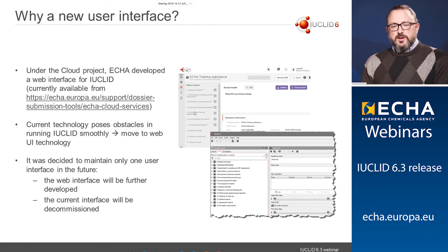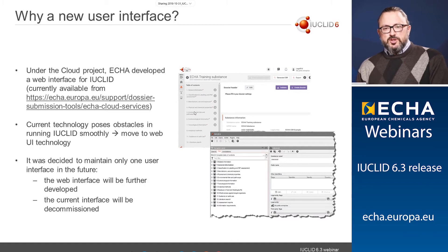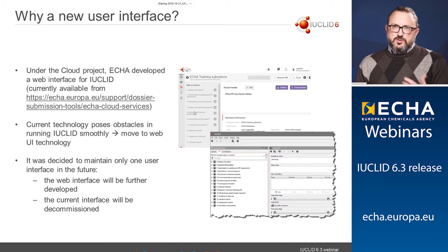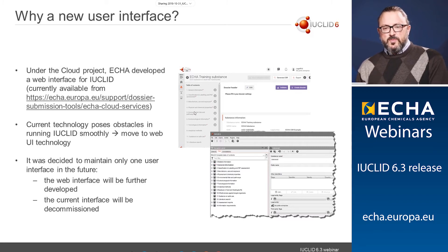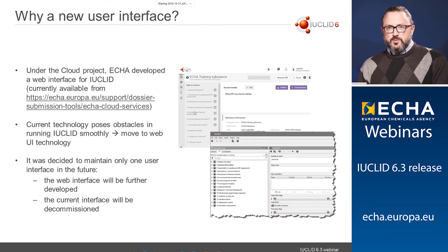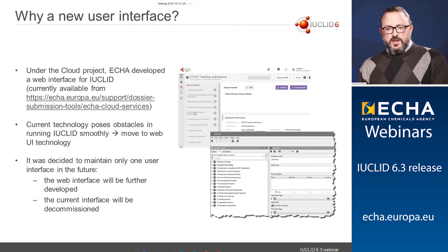Good morning. My name is Eduardo and I'm a member of the Euclid team. I'm going to present a few screenshots of what the web user interface looks like in Euclid 6.3. Last year, in preparation for the REACH 2018 deadline, ECHA developed the Euclid cloud services, which included a web interface that has now been adopted for Euclid 6.3. A few years ago when we developed Euclid 6, it was a good moment to change the interface, also because the European Commission recommended not using applications that run Web Start Java components. So this was a good opportunity to move to web technology, and this is what we have done with 6.3.